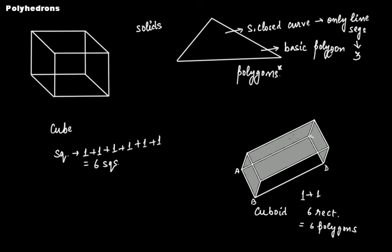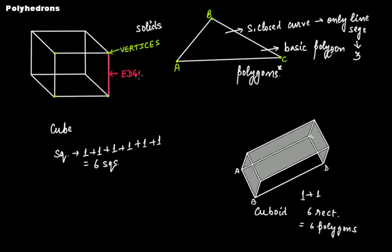Now let's talk more about polyhedrons. These points that you can see here are called vertices — vertices is plural, vertex is singular. Just as a triangle with vertices A, B, C has three vertices, polyhedrons also have vertices. And these line segments are called edges.